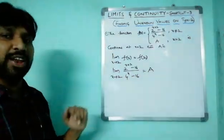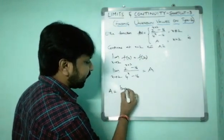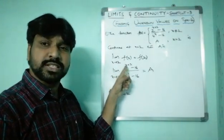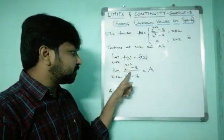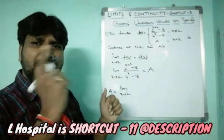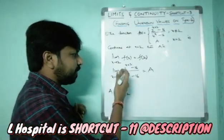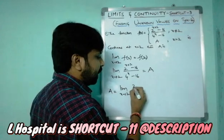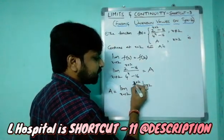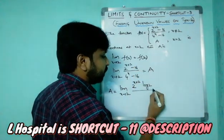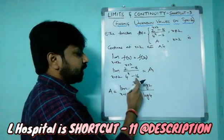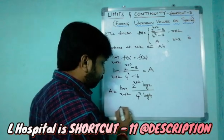We evaluate: limit x→2 of (2^(x+2) − 16) / (4^x − 16). Substituting x = 2: numerator = 2^4 − 16 = 0, denominator = 4^2 − 16 = 0, giving 0/0 form. Applying L'Hôpital's rule: derivative of 2^(x+2) is 2^(x+2)·log2, derivative of the constant −16 is 0; derivative of 4^x is 4^x·log4.